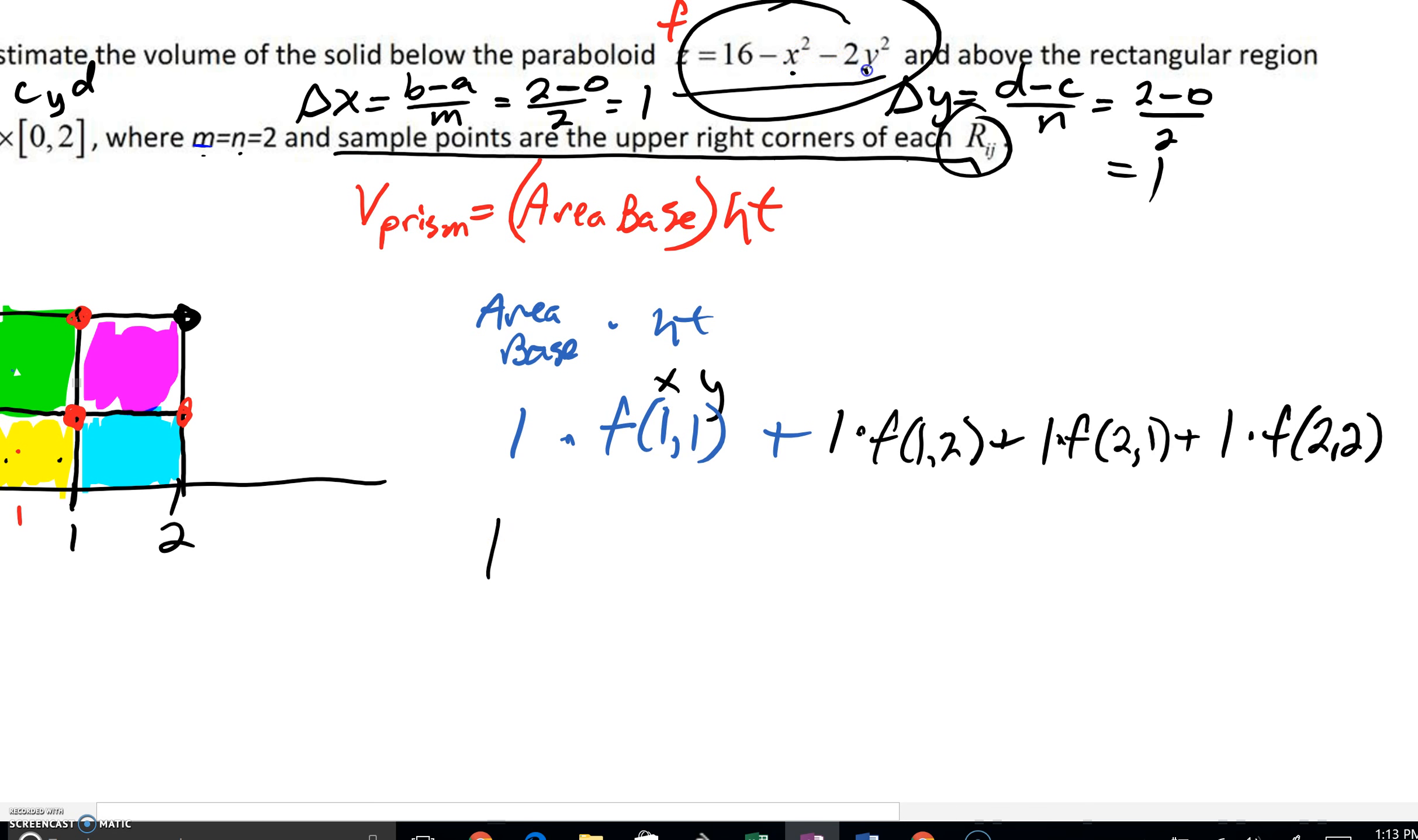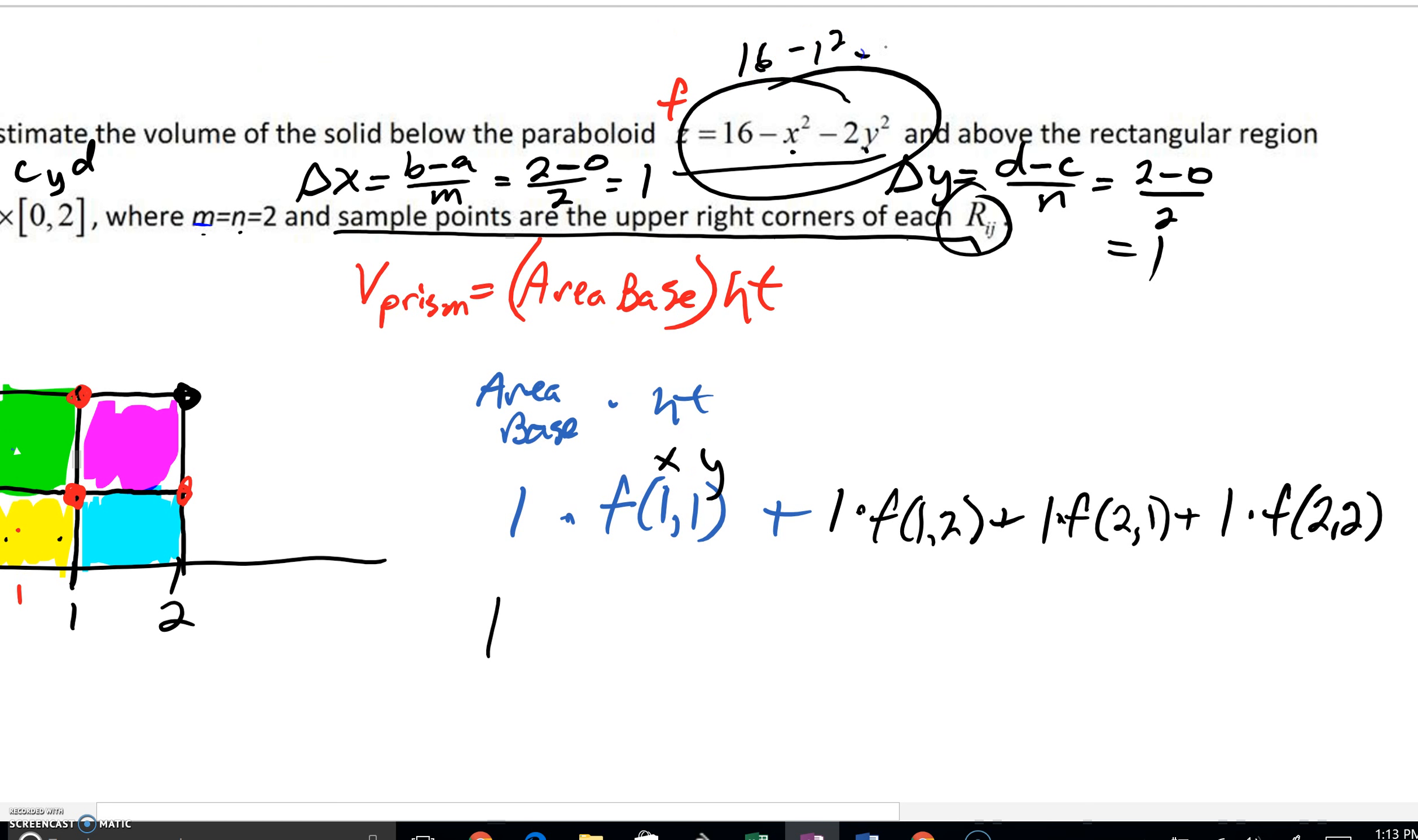So when I plug in a one and a one, what we're really going to get is 16 minus one squared minus two times one squared. What does all that work out to, guys? 16 minus one minus two is 13. And then we could say, next we're going to say plug in a one and a two. That's pretty much saying 16 minus one squared minus two times two squared. Two squared is four. Four times two is eight. So that's a 16 minus eight is eight. And then minus another one. I'm getting seven. Hopefully that's what you guys are getting.